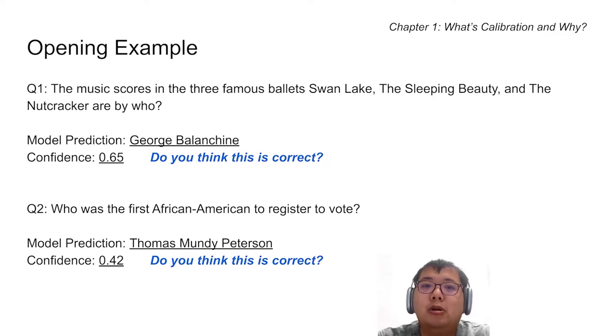Question number two: Who was the first African-American to register to vote? Here, the AI answers the question Thomas Mundy Peterson with confidence .42. Chenlei, do you think these model predictions are correct or not?